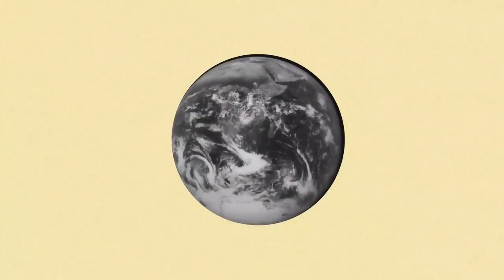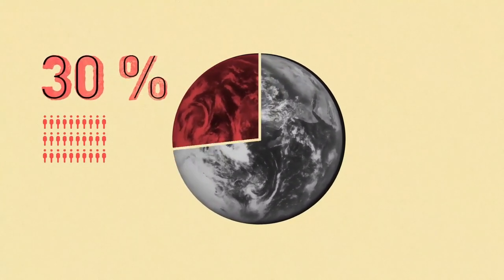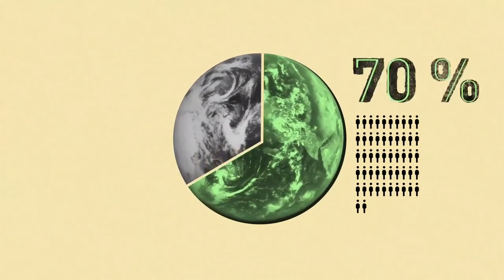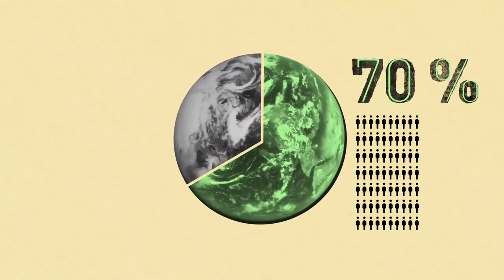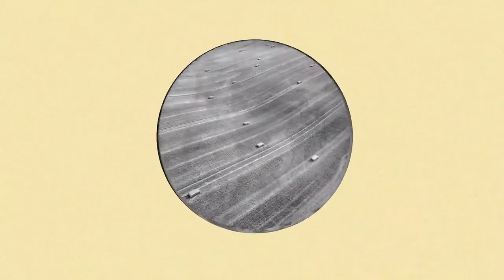And yet, the industrial food system provides food to only 30% of the world's population. In contrast, small-scale farmers, peasants or fisherfolk feed the remaining 70%.